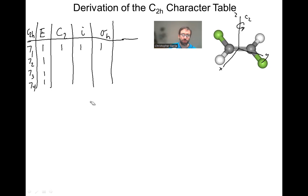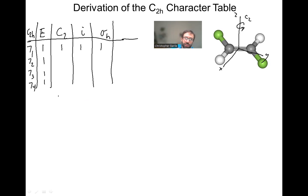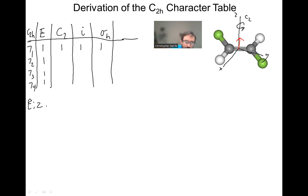Now, instead of using the orthogonality principle as in the other video, we're going to use different functions. I always like to start with z. When we test a function, we think about how that vector transforms under each operation in C2H. If we do identity on z, we get z. If we do C2 on z — this is rotating 180 degrees — the z vector's head is still pointing up because we're rotating around the z axis, so z goes to z.